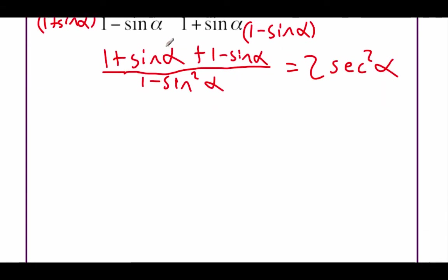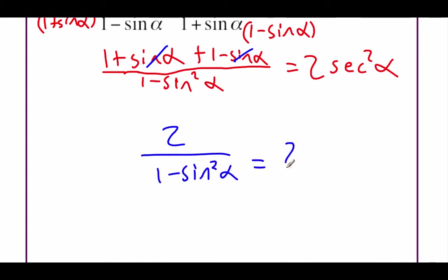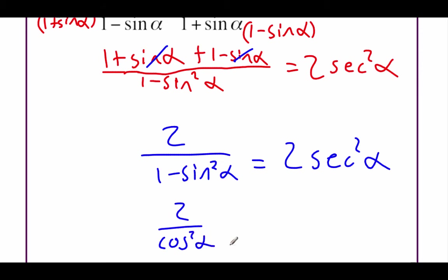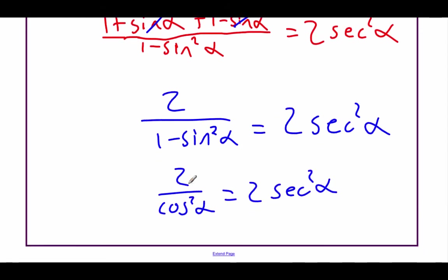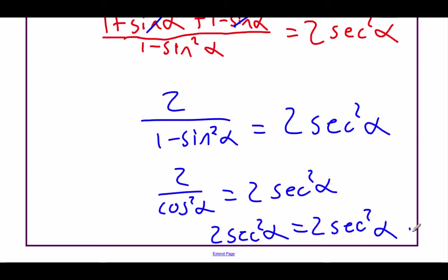On top, the positive sine of alpha and negative sine of alpha cancel, and one plus one gives us two. So we have two over one minus sine squared of alpha, and we're still showing that equals two secant squared of alpha. Now, one minus sine squared of alpha is one of our Pythagorean identities — it's the same as cosine squared of alpha. And the reciprocal of cosine squared is secant squared. So the left-hand side is two secant squared of alpha, which matches the right-hand side. We're all done with this one.